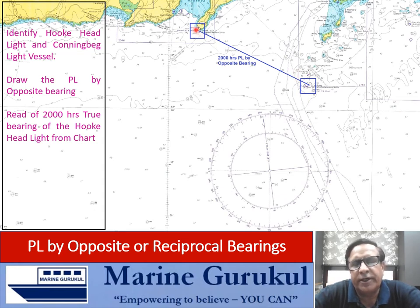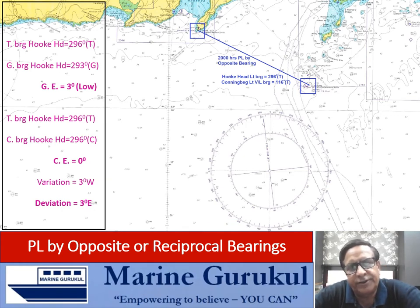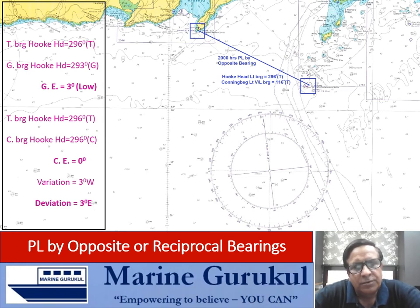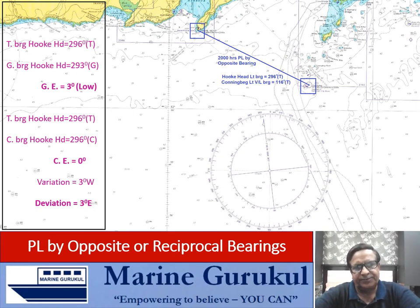Read off the true bearing of Hook Head light by transferring the line to the compass rose: it is 296° true. The gyro bearing of Hook Head given is 293°, so the gyro error is 3° low. The compass bearing given is 296°; the true bearing is also 296°, so compass error is nil (0°). With variation 3° west, deviation must be 3° east to make the compass error zero.